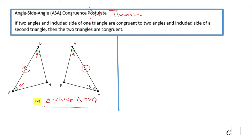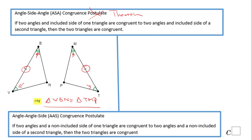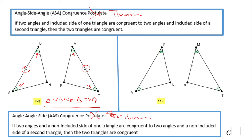The last way to prove two triangles are congruent is the Angle-Angle-Side postulate. You can see it here: we have angle, angle, side in one triangle, and the same arrangement — angle, angle, side — in the other. This is the last method you can use for proving that two triangles are congruent. If you enjoyed this video, don't forget to click the like button and come back to C Squared for more help.